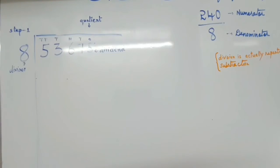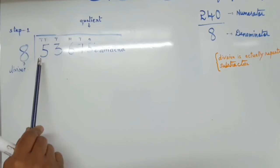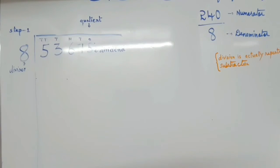So we have to group the first two digit numbers, that is 5 and 3. It becomes 53. Now we ask how many 8's will make 53?